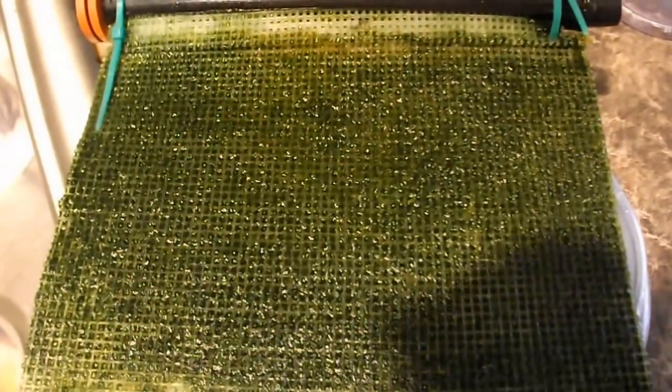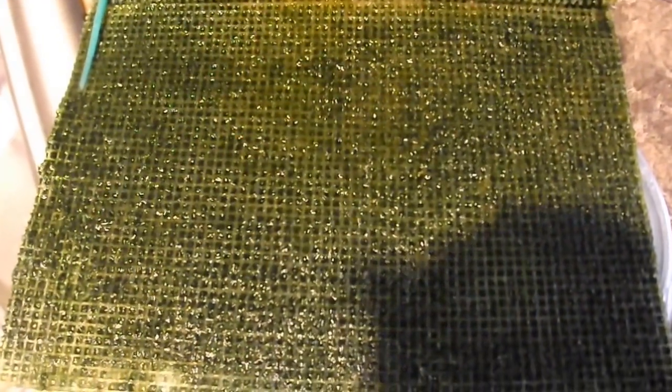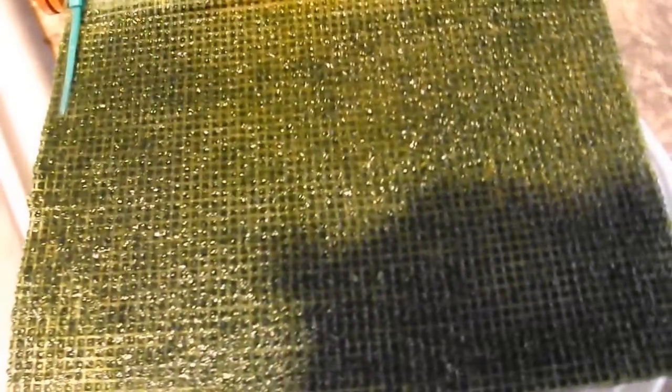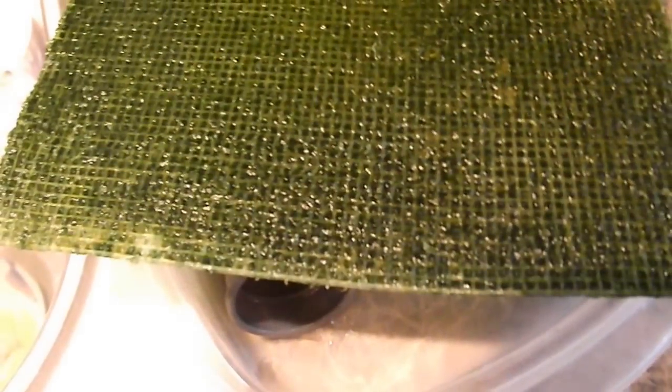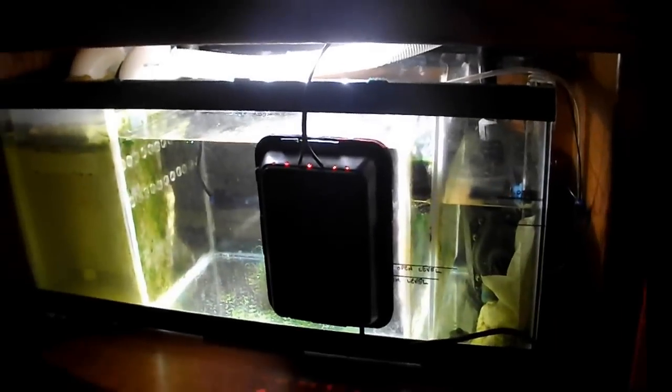Just a quick look at my vertical waterfall style algae scrubber, this is after two days of growth. So I finally, and I've only had it six weeks, so I finally got it to start growing green and now I'm changing it all up before I even see any real nutrient export or anything. So I'm kind of nervous about that because look at all that green, how well the scrubber started working.